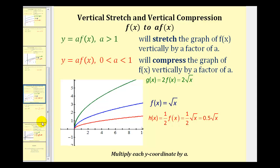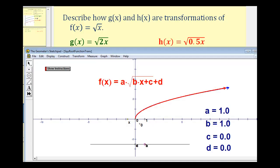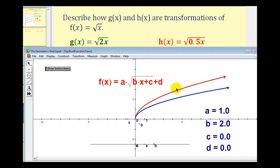Now we have one more transformation to consider. We want to consider g of x equals the square root of two x, and h of x equals the square root of one half x, or 0.5x — notice how the constants are underneath the square root. Going back to our animation, we'll change the value of b to positive two for g of x. As we change b to two, this may appear to be a vertical stretch, but it's actually a horizontal compression. X values that would be half of the parent function's x values would produce the same outputs, so we call this a horizontal compression by a factor of one half — the reciprocal of b.